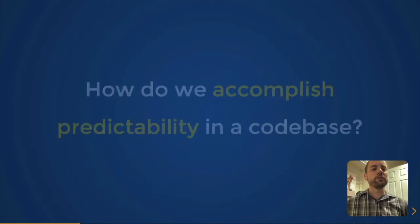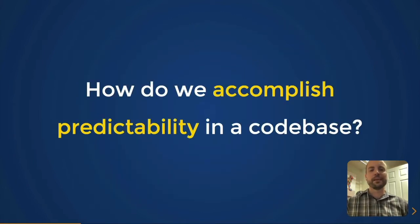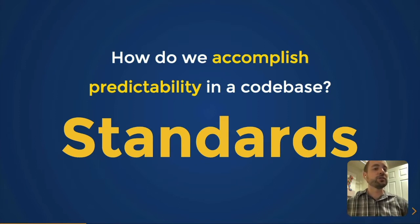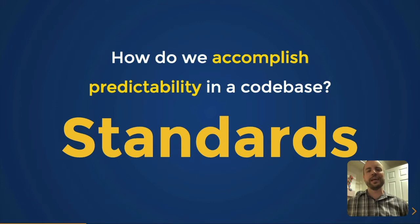So how do we accomplish predictability? If I may be so bold, I'm going to try to answer it in a single word: Standards. Why standards? Because this is really how you make anything predictable. I can know with near 100% certainty that when I go to change the sheets on my son's bed tonight, the sheets I get out of the closet will fit — because they follow a standard sizing system.